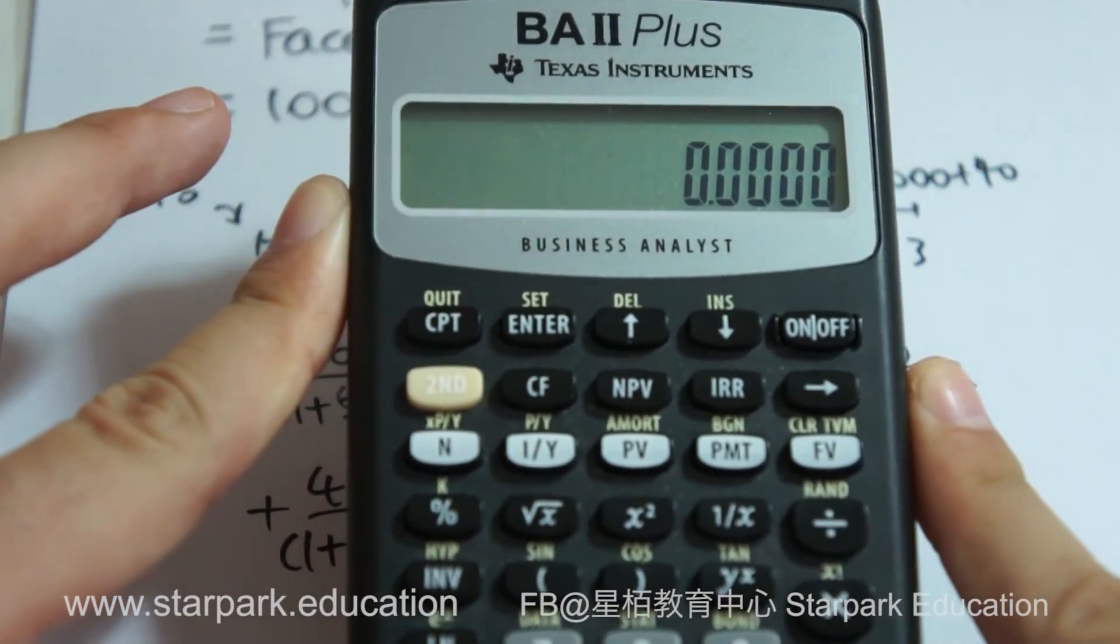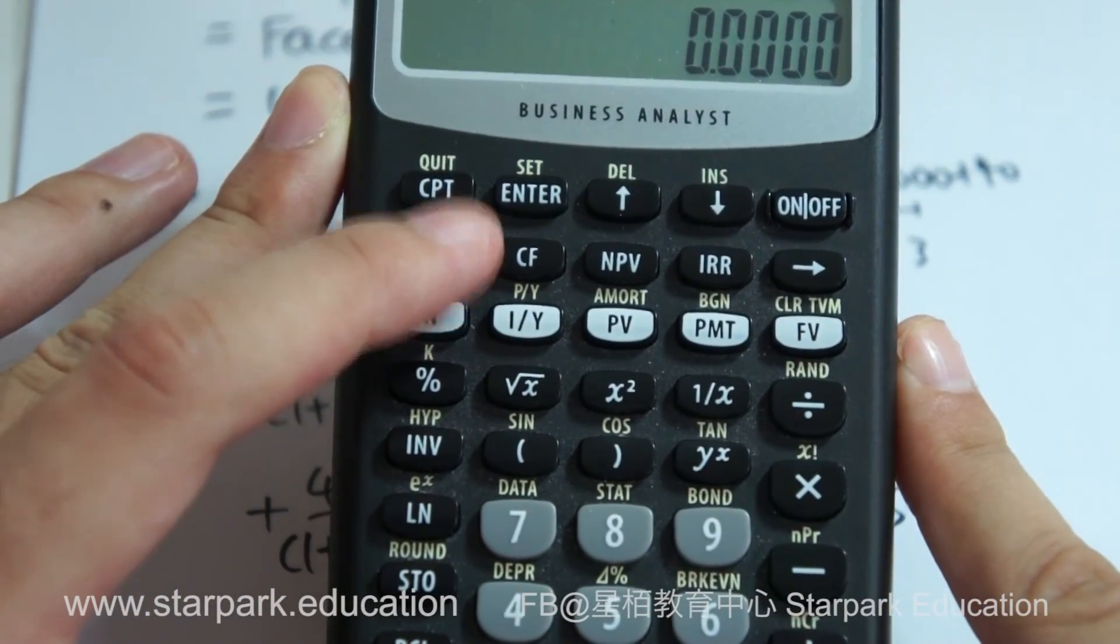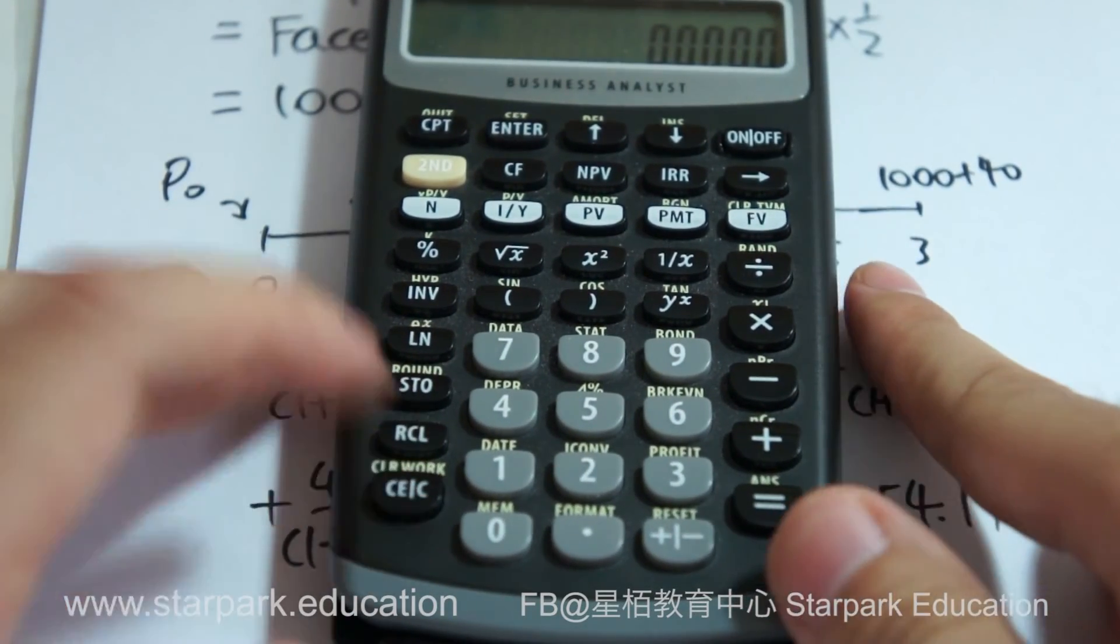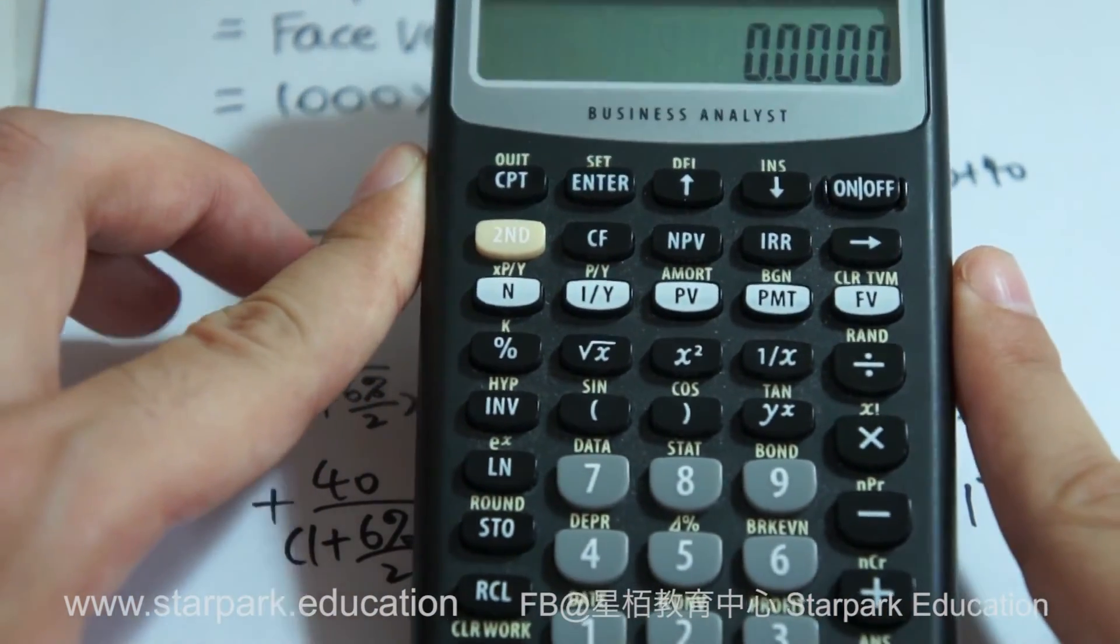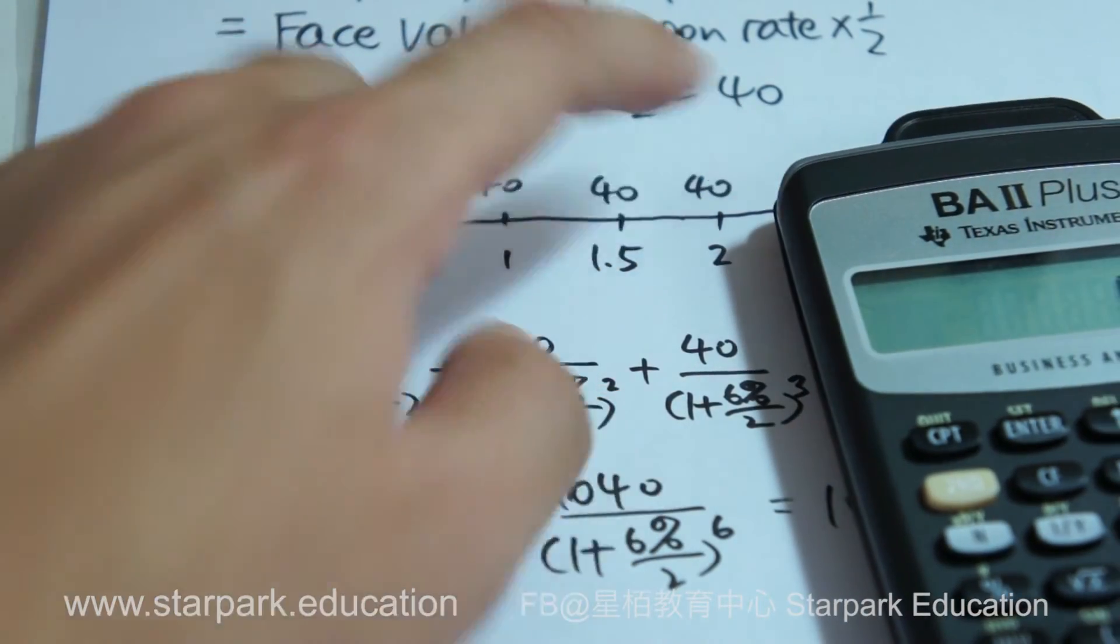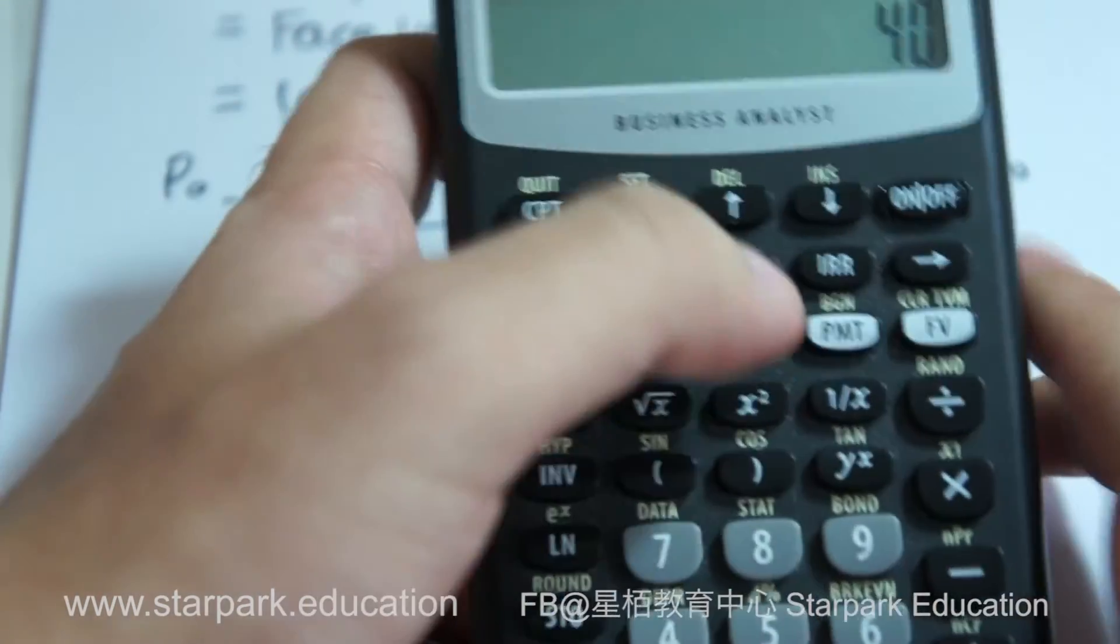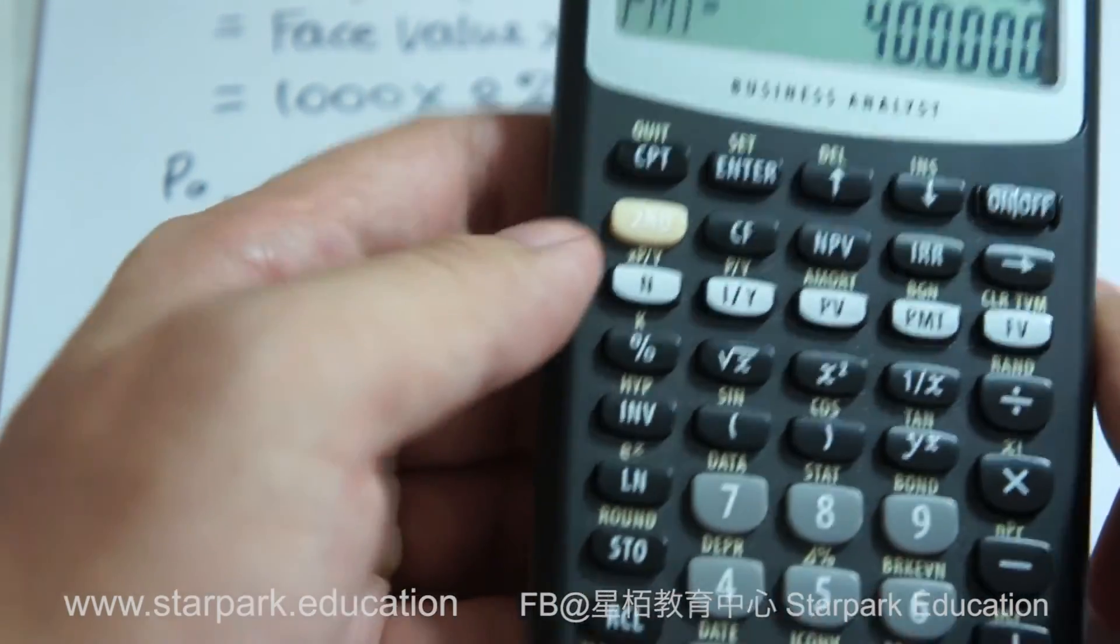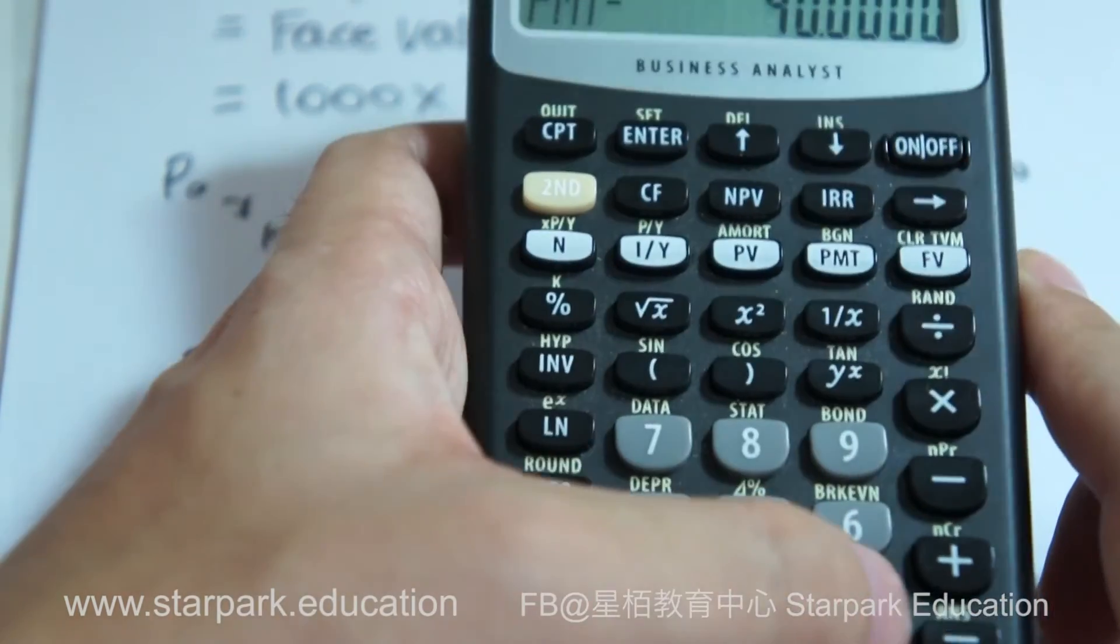Here is BA2 Plus financial calculator. The first step, once again, is to clear the previous data. Second, and then cancel, which is our bottom left corner. Now what you need to input: the first thing, the $40, which is the coupon you have to receive per period, you have to input 40 here, and PMT, which means the coupon, the payment per period.